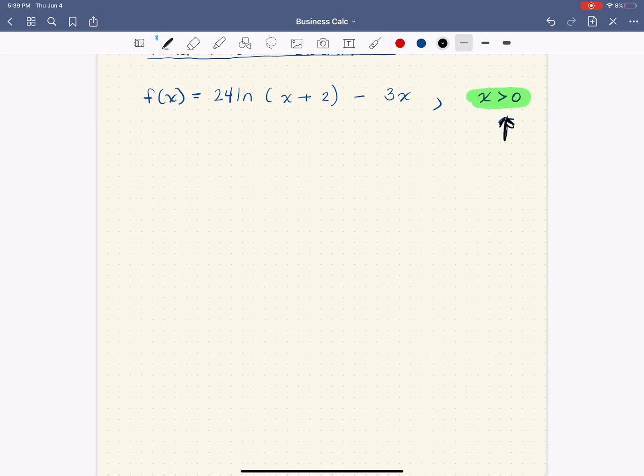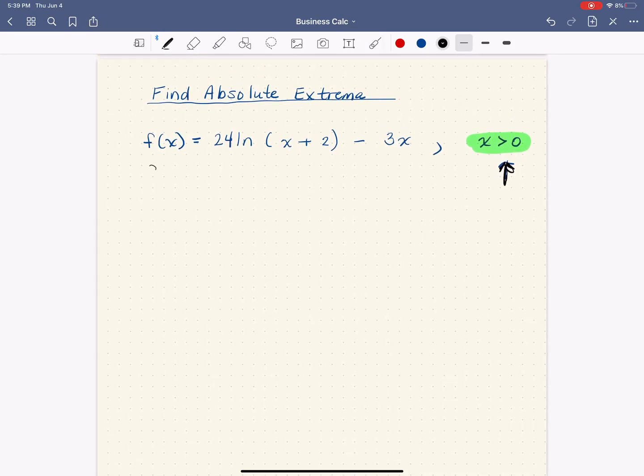So as always, what we're going to do is find the first derivative, because that's how we find our critical numbers. And it's 24 times a function, so remember that derivative of natural log is 1 over the something and then times the derivative of the something.